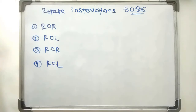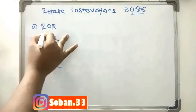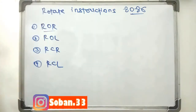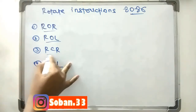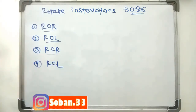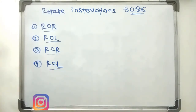Hello everyone. In this video we will learn about rotate instructions of the 8086 microprocessor. There are around 4 types of rotate instructions. First is ROR — rotate right without carry. Second is ROL — rotate left without carry. Third is RCR — rotate right through carry. And RCL — rotate left through carry.